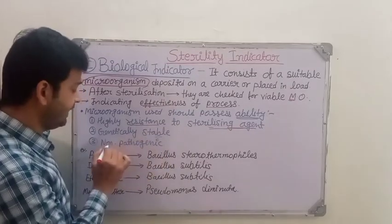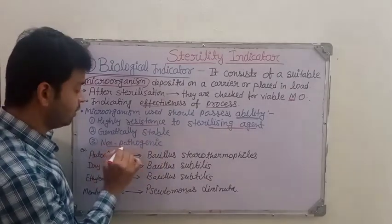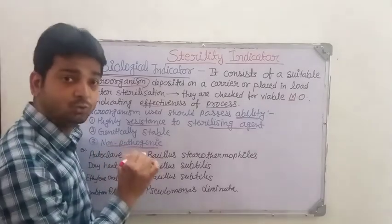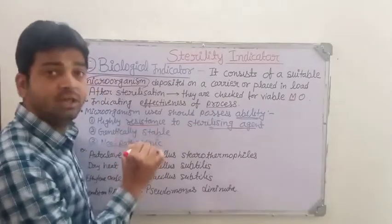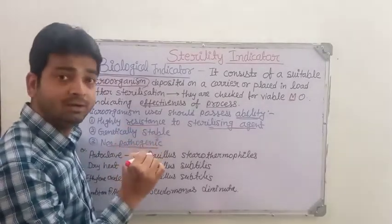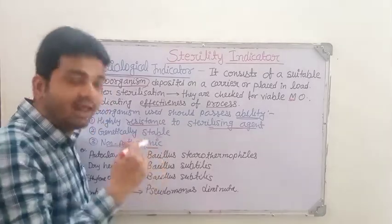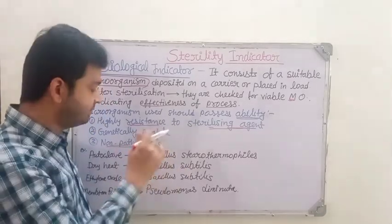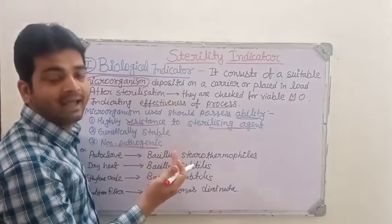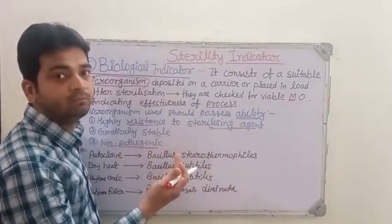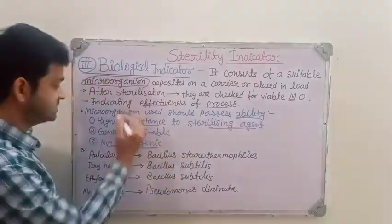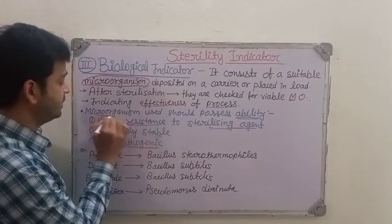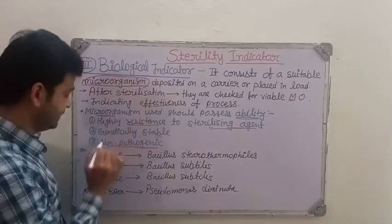They should be non-pathogenic. That is very important because these microorganisms we are going to use along with our formulations and nutrient media which we are sterilizing. If they are pathogenic, the entire process is going to fail. So these three abilities — highly resistant, genetically stable, and non-pathogenic — are what the microorganisms used as biological indicators must possess.